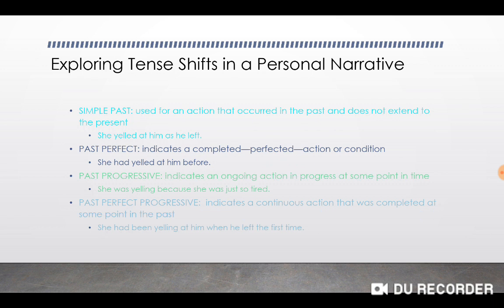The next is the past perfect. This indicates a completed, perfected action or condition that happened in the past. Look at the sentence: 'She had yelled at him before.' You can see the verb phrase is 'had yelled' — in simple past it's just 'yelled,' and now it's 'had yelled.' That indicates that the yelling had happened at a finite time before. So 'she had yelled at him before' means that it happened and it's over.